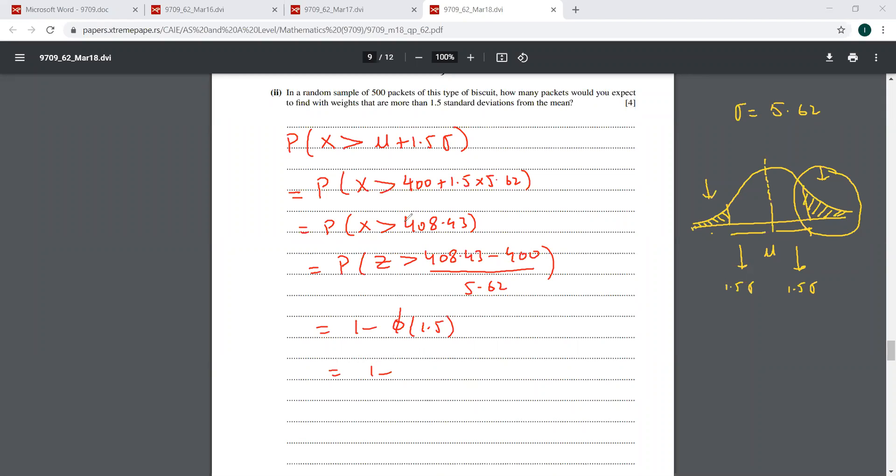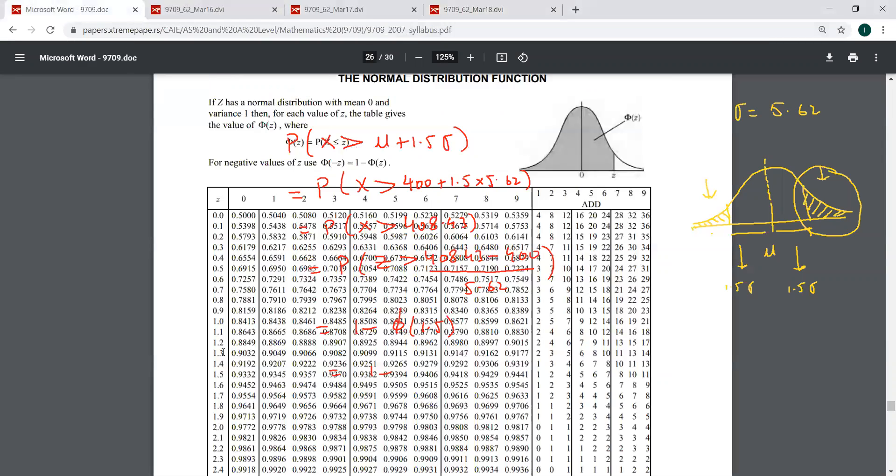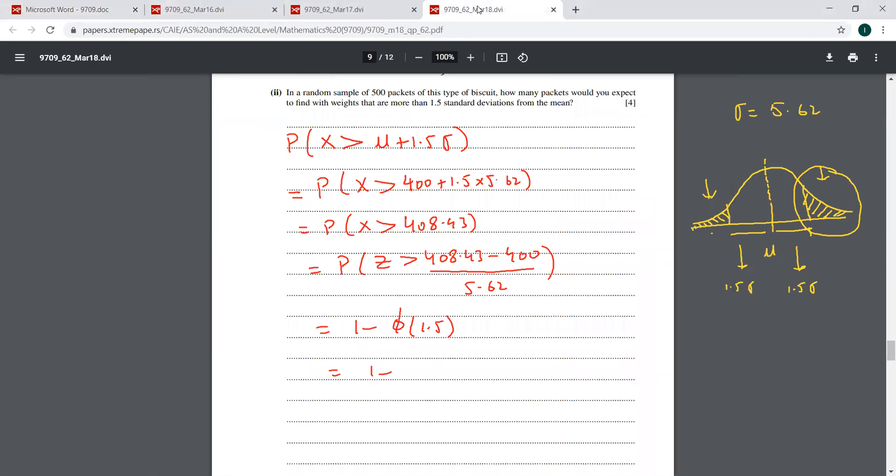So we have to find 1 minus phi of 1.5. What is phi of 1.5? That is 0.9332. So this is 1 minus 0.9332, which is 0.0668.